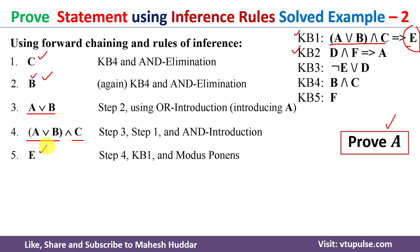Now from step number five, that is E, and knowledge base three, we have negation of E or D. Here we have E. So this E and E will get cancelled. What is left over here is D. That is known as unit resolution rule in inference rules.